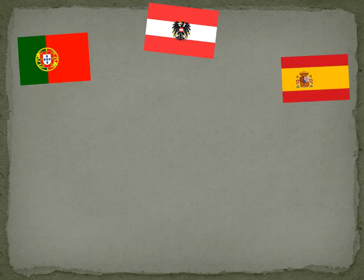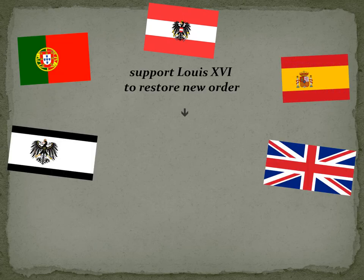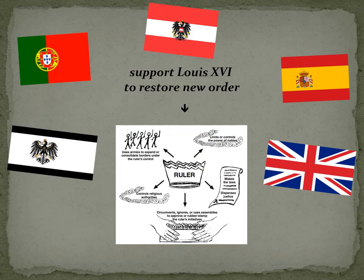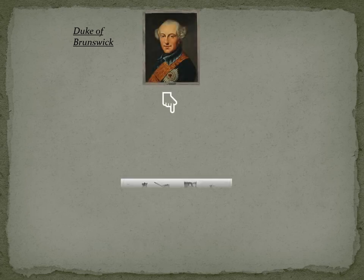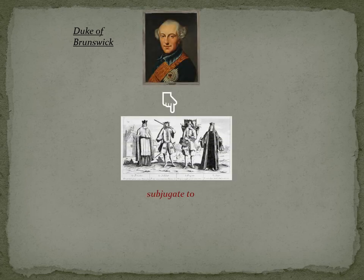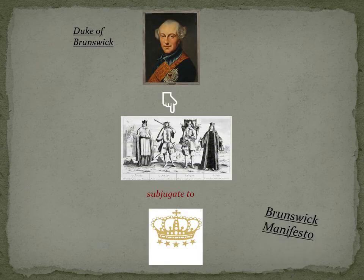Louis XVI expected a defeat of the French troops and needed the help of the monarchs abroad to restore the old order. The Duke of Brunswick demanded the unconditional surrender of the French to subjugate to the king.